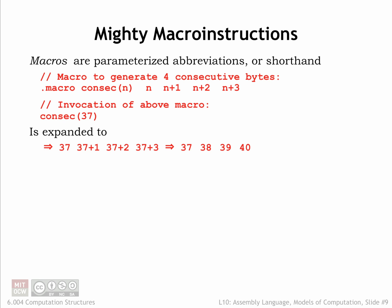When there's an invocation of the CONSEC macro — in this example with the argument 37 — the body of the macro is expanded, replacing all occurrences of n with the argument 37. The resulting text is then processed as if it had appeared in place of the macro invocation.